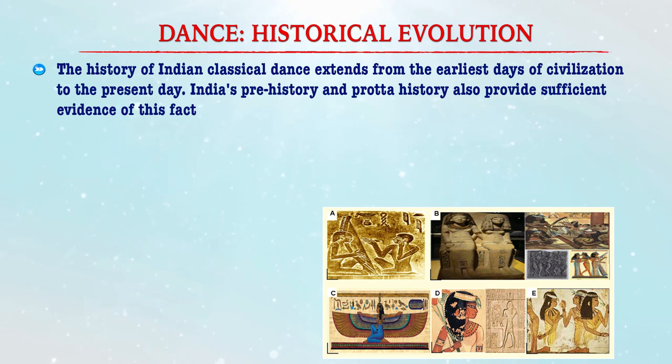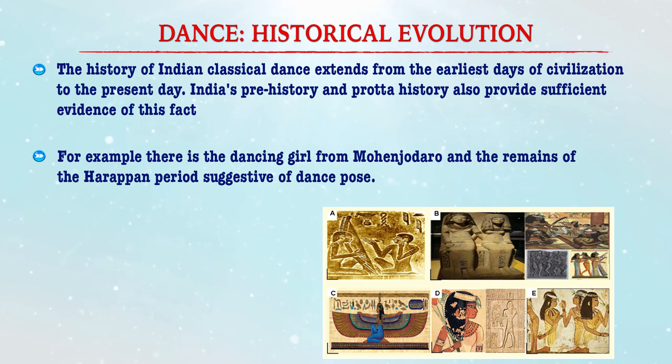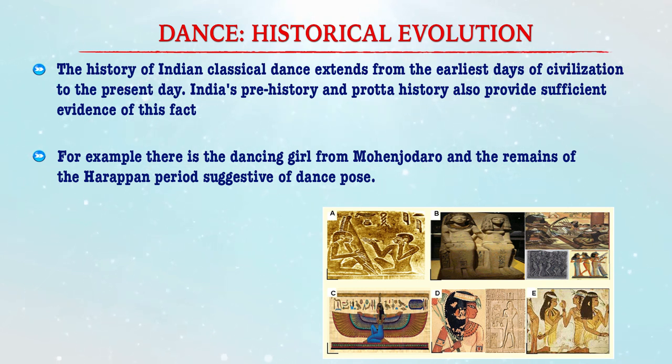The history of Indian classical dance extends from the earliest days of civilization to the present day. India's pre-history and proto-history also provide sufficient evidence of this fact. We have examples of a dancing girl from Mohenjo-daro and the remains of the Harappan period also suggest various dance poses. Therefore, we can conclude that from the earliest civilization, dance as a social activity has been associated with all moments of the cycle of life. Roughly speaking, we can trace the history of dance into three main time divisions.